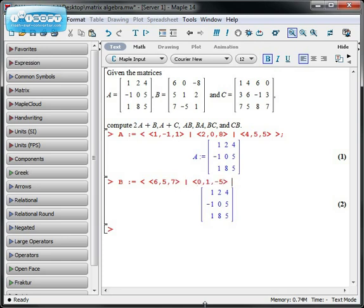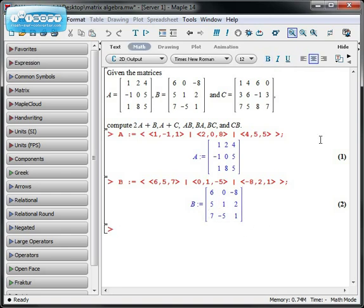And the third column will be -8, 2, 1. So I'll enter those into Maple. And now I have the matrix B. Let me double check that it matches. Alright, that's a pretty good deal.